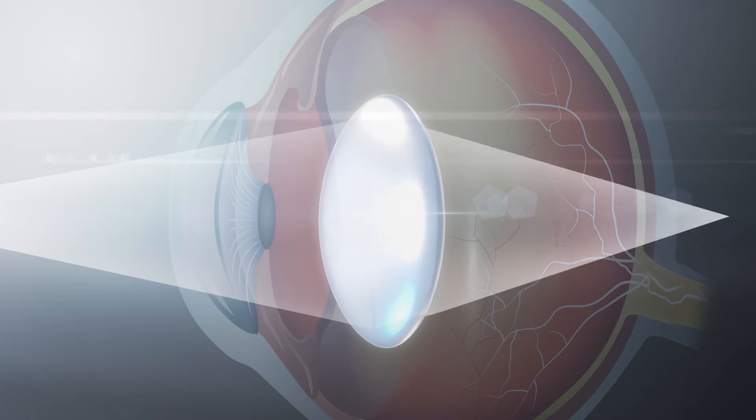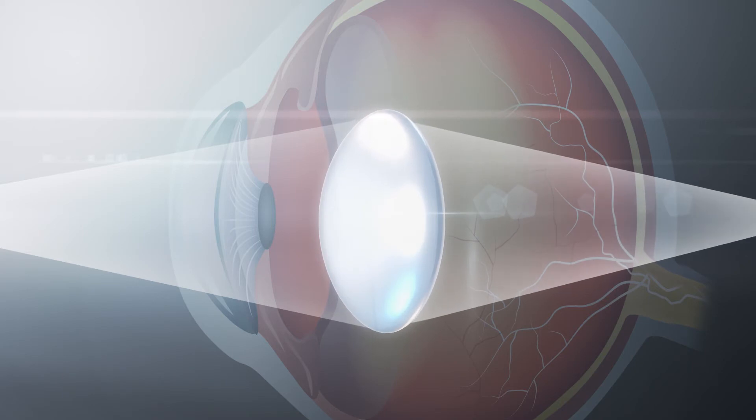Once you reach your 40s, it becomes difficult to pull the lens into shape. The lens gets stiffer and eventually it loses its ability to flex altogether.